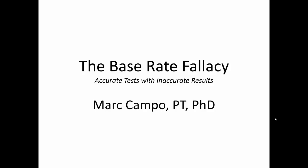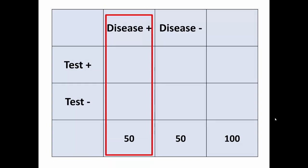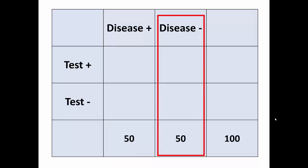The base rate fallacy: how accurate tests can lead to inaccurate results. To explain, we're going to use the same sample of 100 people that we've been using in our other videos — 50 of whom have a disease in question, and 50 of whom do not. We're going to calculate sensitivity and specificity using the same 2x2 table with test status in the rows and disease status in the columns, which will be important to note for later.